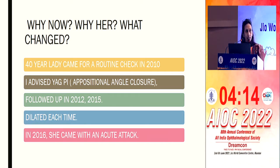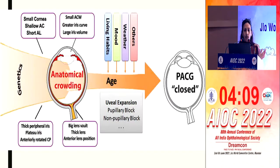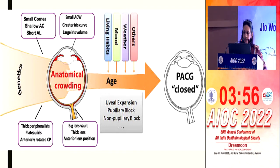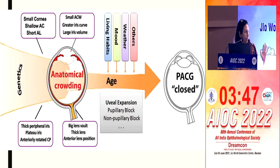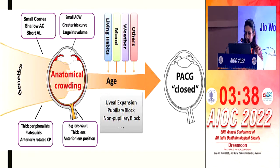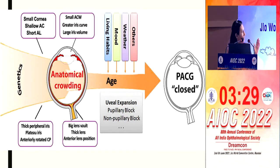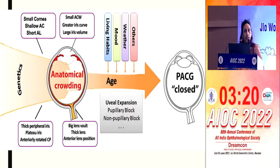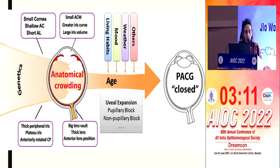We see two patients with similarly closed angles and neither develops an attack. The genetic makeup of a person decides the structure of the eye — including the cornea and crowded anterior segment — which predisposes to angle closure. These form the groundwork upon which subsequent factors, when they come into the right proportion, will precipitate an angle closure attack. The main precipitating factor is aging: as a person ages, the lens thickens and the anterior lens position becomes more favorable for precipitating an acute attack.